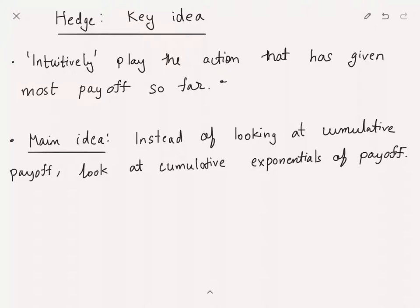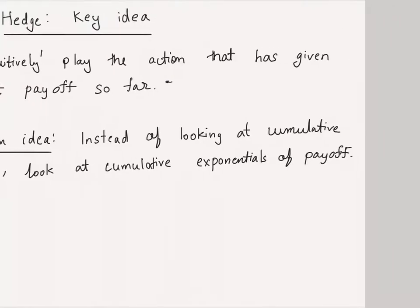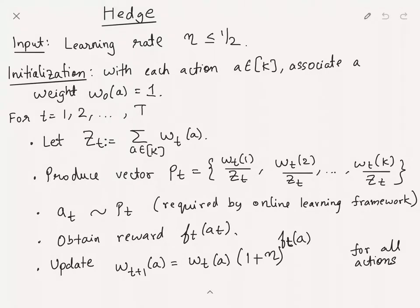Let's see how this is implemented formally. Hedge as an algorithm takes a learning rate eta which is between zero and half as input. It maintains a set of weights for each action. The initialization step: for each action a in k, it sets the weight to be w1(a) = 1 for every action.